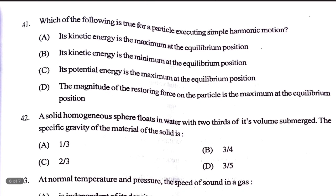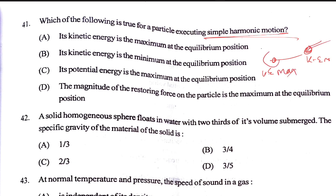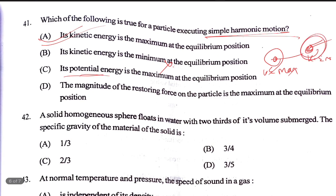Which of the following is true for a particle executing simple harmonic motion (SHM)? At the extreme position, kinetic energy is minimum. At the equilibrium position, kinetic energy is maximum. Potential energy is maximum at the extreme position, and minimum at the equilibrium position.